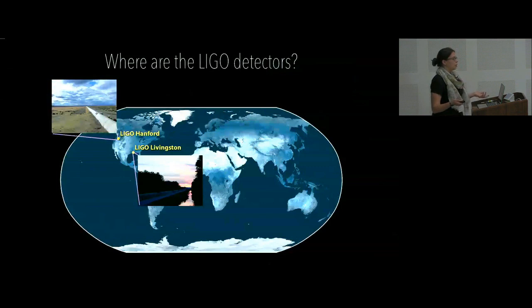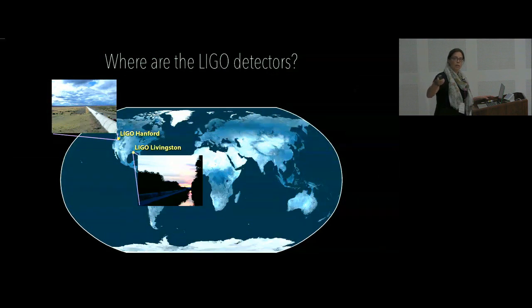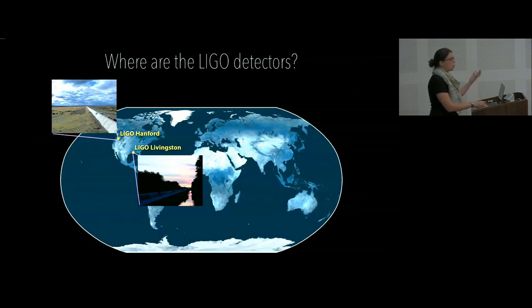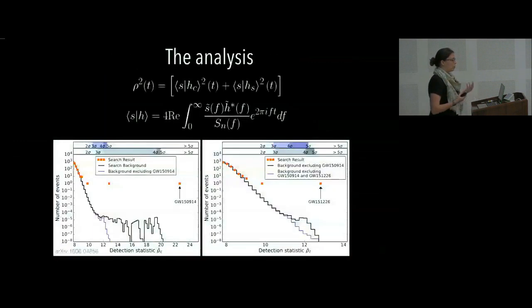So we have two of these extremely complex instruments. So one is, they're both in the United States. One is in the desert in Washington and the other in the swamp in Louisiana. And it's also important to understand more about our analysis to see what's important about how the noise is affecting our ability to make astrophysical detections and statements.